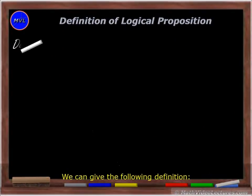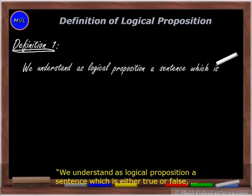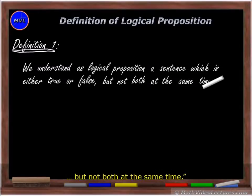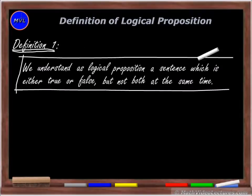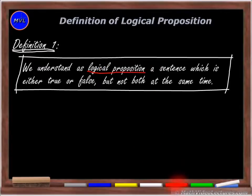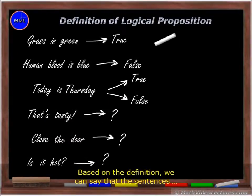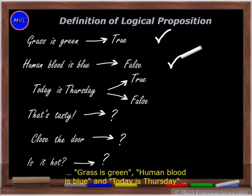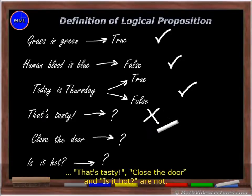We can give the following definition. We understand as a logical proposition a sentence which is either true or false, but not both at the same time. Based on the definition, we can say that the sentences 'grass is green,' 'human blood is blue,' and 'today is Thursday' are logical propositions, while the sentences 'that's tasty,' 'close the door,' and 'is it hot' are not.